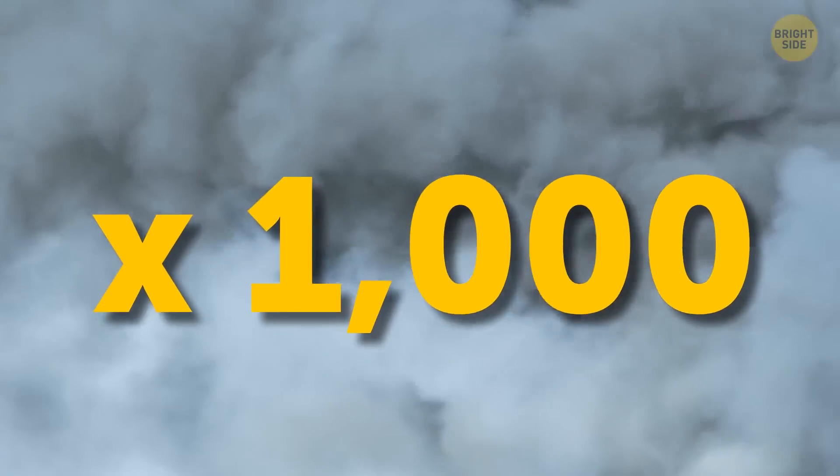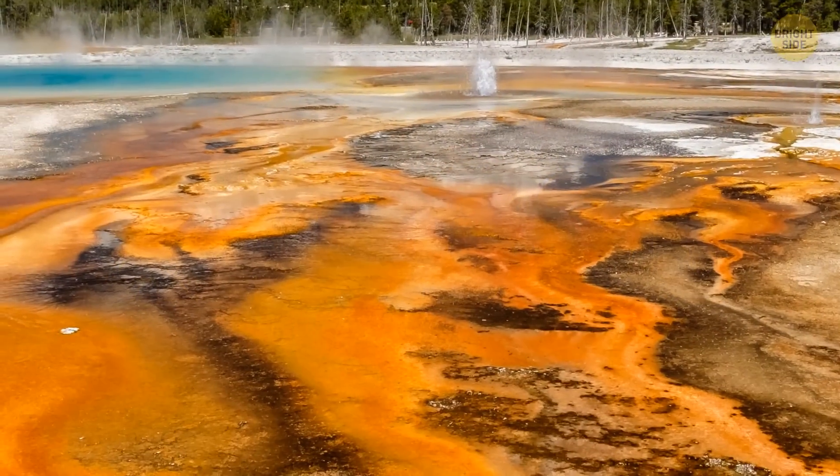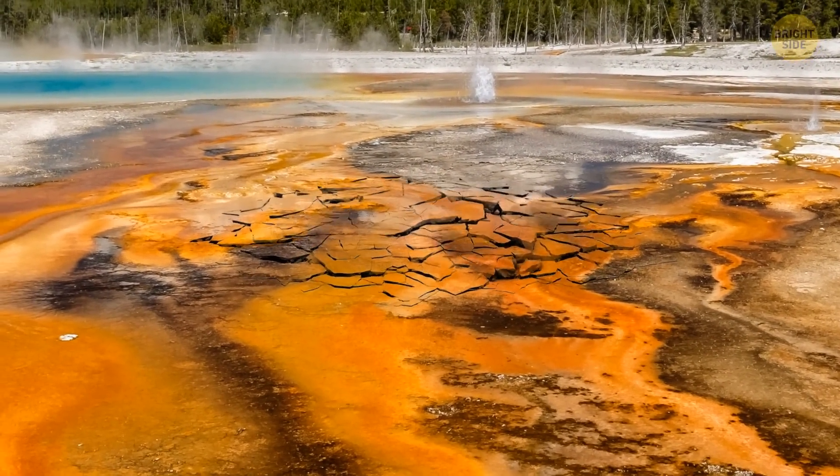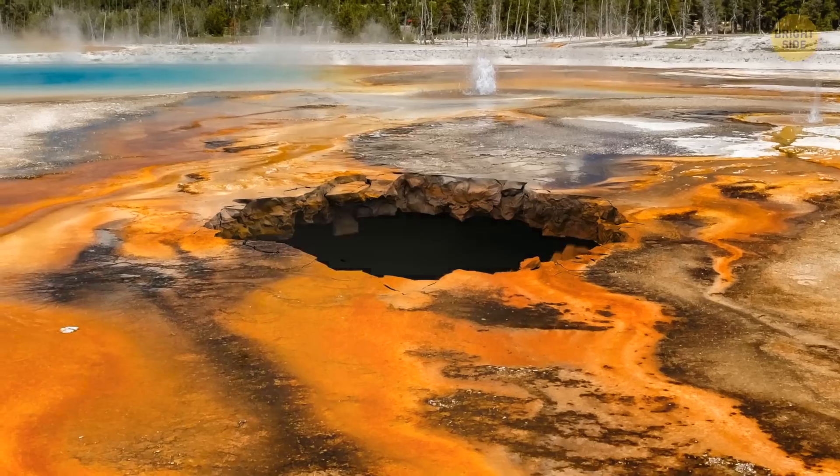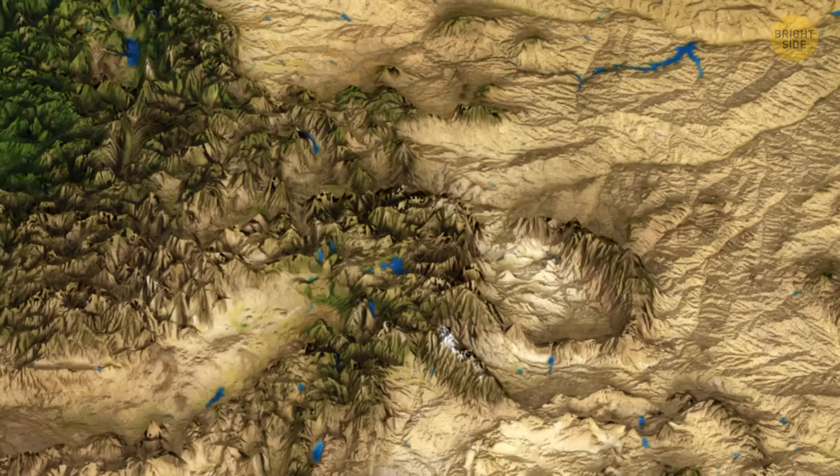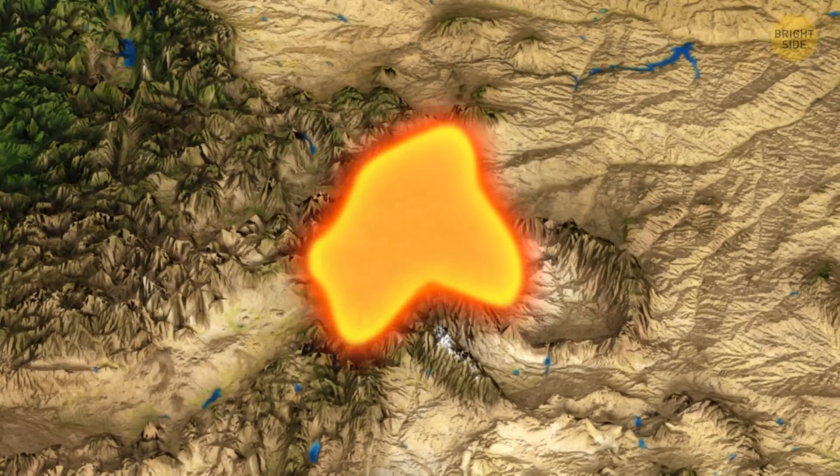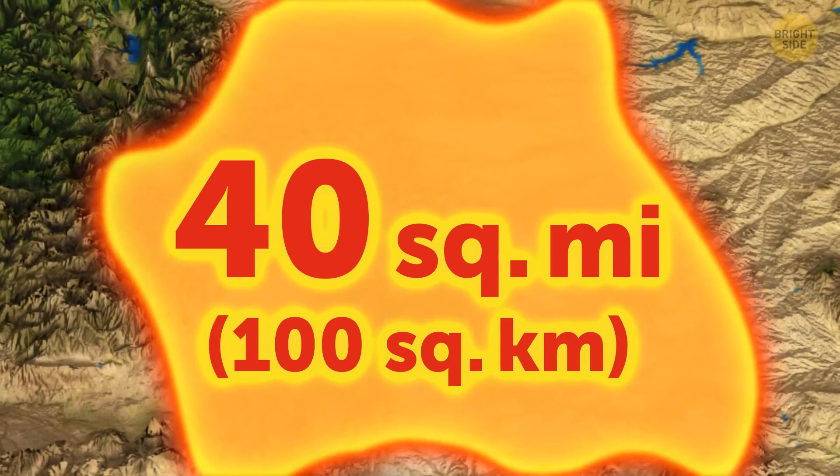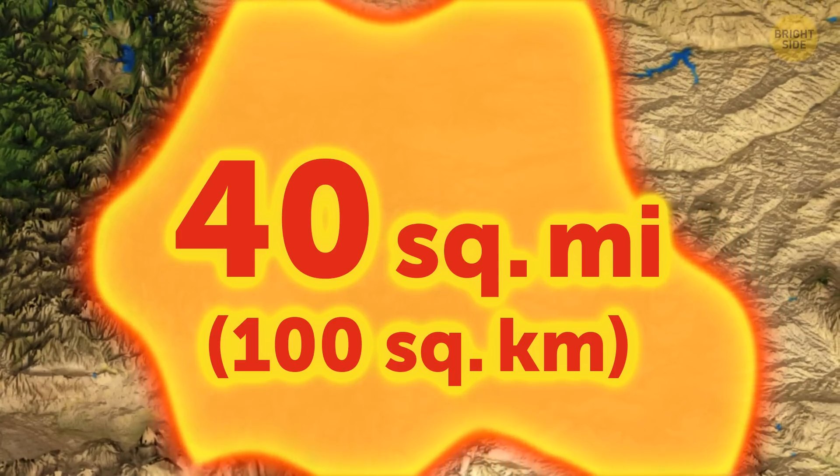This is what a Yellowstone eruption would look like. At first, a huge area in the middle of the National Park would shake, crumble, and then blast upwards in a megaton explosion. Lava flows and magma rocks would cover the area of about 40 square miles, roughly half of Washington, D.C.